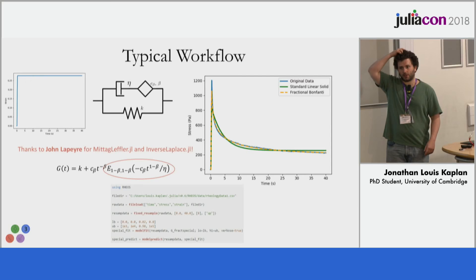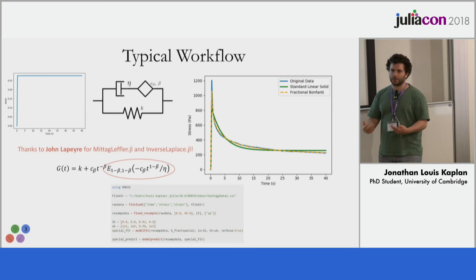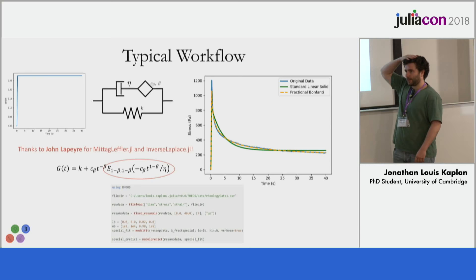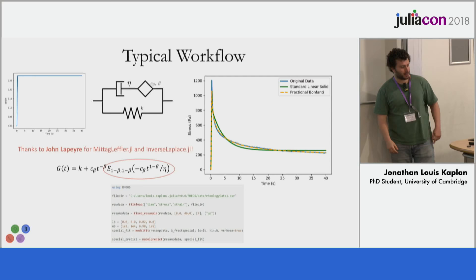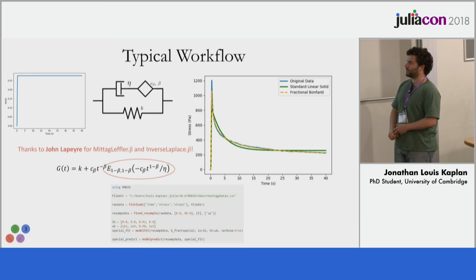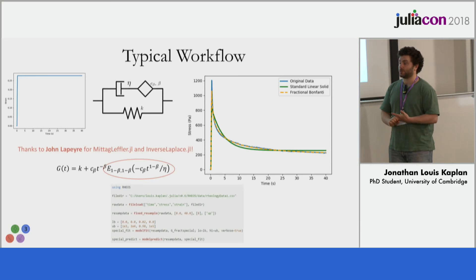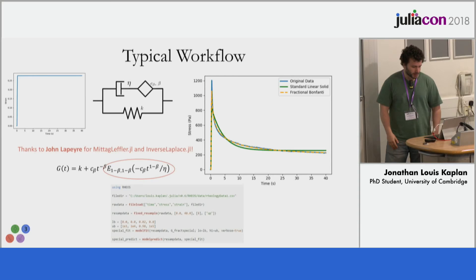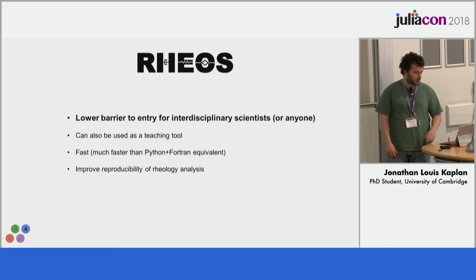This is a good example of where things get complicated and where it's really nice to have a package like RHEOS — for biologists or anyone not particularly interested in coding. There are a lot of people doing materials characterization who just don't have much coding experience. That E function is the Mittag-Leffler function and it's not very nice to implement. Fortunately, someone has implemented a really nice Julia package for that function, and also the InverseLaplace.jl Julia package, which was very useful in other parts of RHEOS.